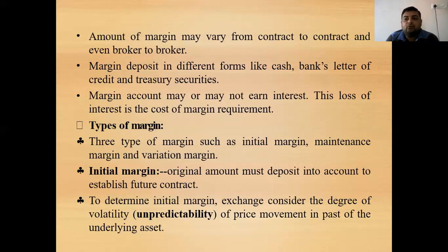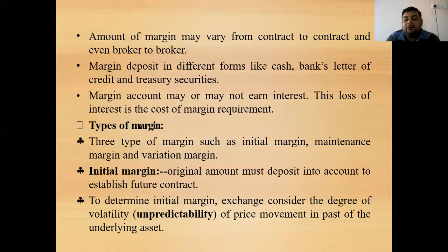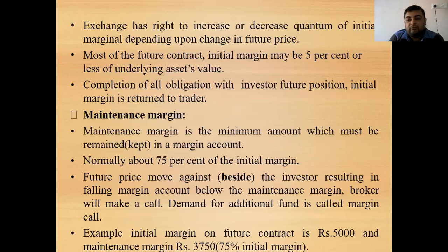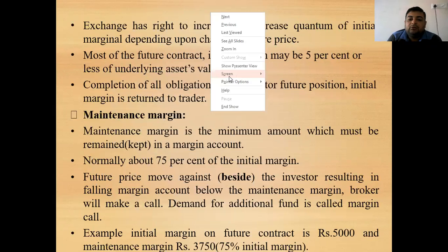To determine the initial margin, the exchange may consider the degree of risk — how much risk is involved based on the past movement in the price of the underlying asset. The exchange has the right to increase or decrease the quantum of margin depending on the change in futures price. For example, if the margin is 5%, the exchange may increase it to 10% or decline it to 3%, depending on the margin requirement.